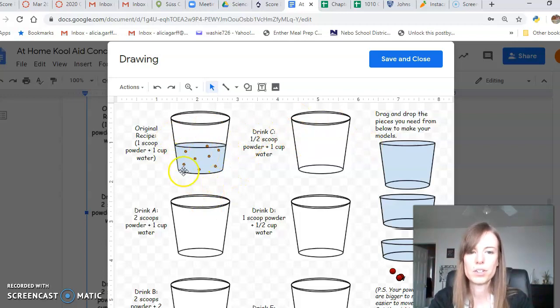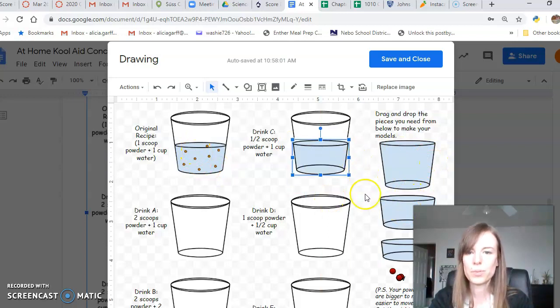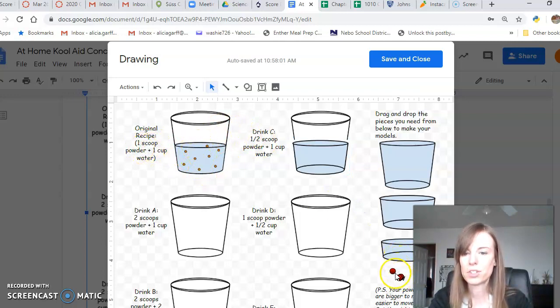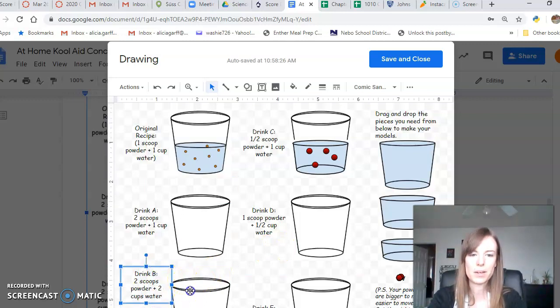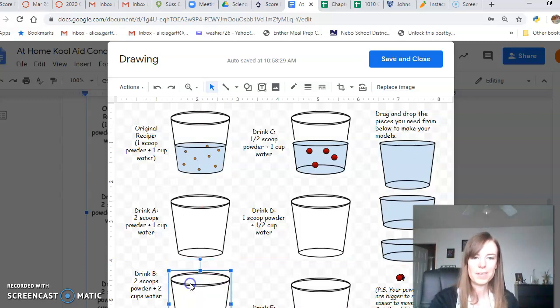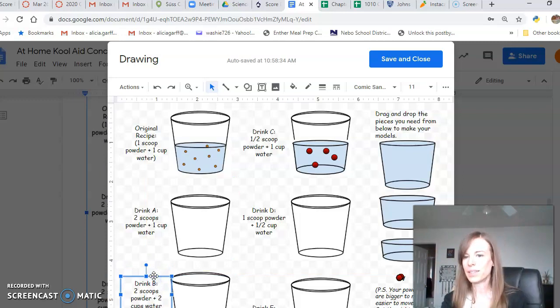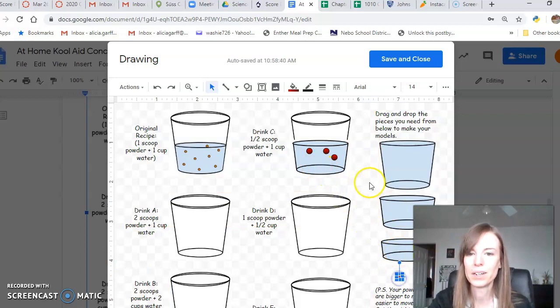You need to make these other amounts. So what you need to do, just double click and it will come up with a drawing and then you can move stuff around. For example, drink C wants you to have a half scoop of powder and one cup of water. So one cup of water we said is this amount, so you move that over there. And then a half scoop of powder, if one scoop of powder is eight, then a half scoop would be four. And so your little powder dots are over here. It's sometimes hard to scroll on these things, so if it's not letting you scroll, just drag these text boxes up so you can see what they want from you.